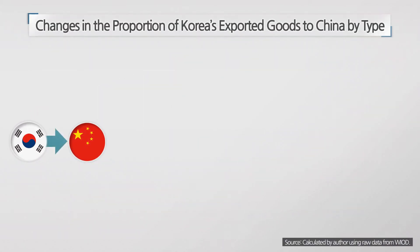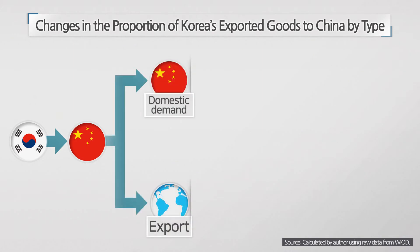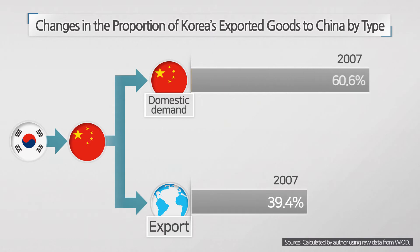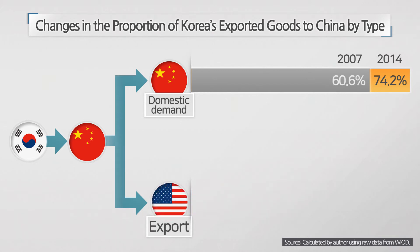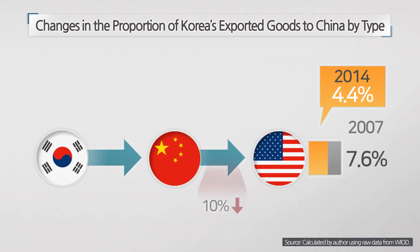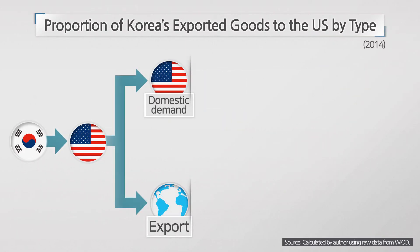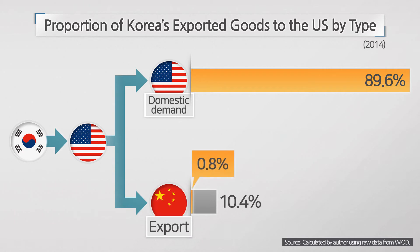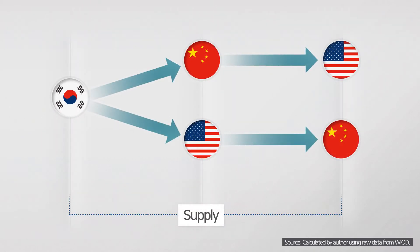First, let's look into the supply side. Of Korea's exported goods to China, the share of those used in China's processing trade fell from 39.4 percent in 2007 to 25.8 percent in 2014, from which the share of those re-exported to the U.S. fell from 7.6 percent to 4.4 percent. This implies that a 10 percent decrease in China's exports to the U.S. will result in a 0.44 percent decrease in Korea's exports to China. And if Korea's intermediate goods exported to the U.S. — the share used in processing U.S. export items — marked 10.4 percent during the same period, only 0.8 percent of which was used in items to re-export to China. The findings reveal that within the global supply chain, Korea is more closely connected to China than the U.S.